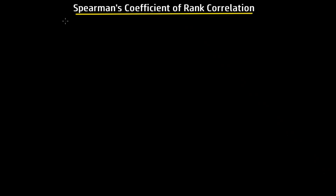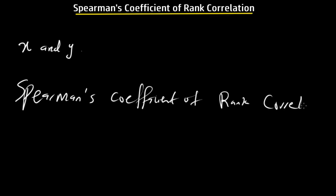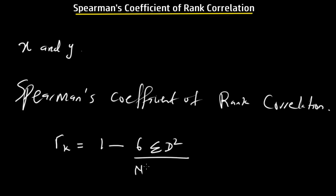In this tutorial, we are going to be looking at another method of determining the amount of correlation between two given scores, x and y. We are going to be using the ranks of the scores instead of the actual scores, and this method is called the Spearman's Coefficient of Rank Correlation. This is the formula: rk equals 1 minus 6 times the summation of d squared, divided by n times (n squared minus 1), where d is the difference between the pairs of rankings.